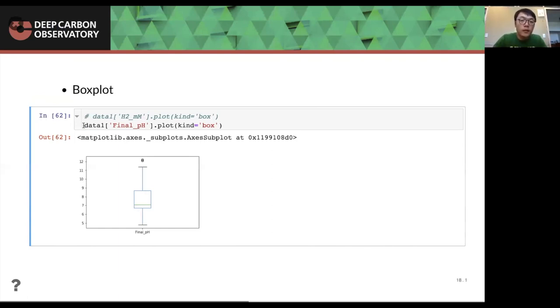And if we take a back, take a look back at the H2 column, we can see that most of values are outliers by the model. So, which means the H2 column has a much larger range of values than the other column, the final pH column.